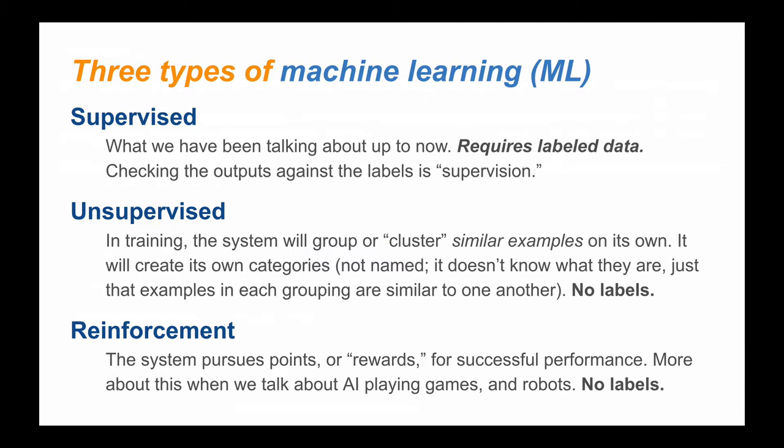This week we will talk about reinforcement learning, which includes a technique called Q-learning. You'll remember from a previous week that there are three broad types of machine learning. So far in this course we have concentrated on supervised learning — the kind with labeled data that requires a really large amount of data. We will continue talking about reinforcement learning next week when we discuss AI systems that play games.